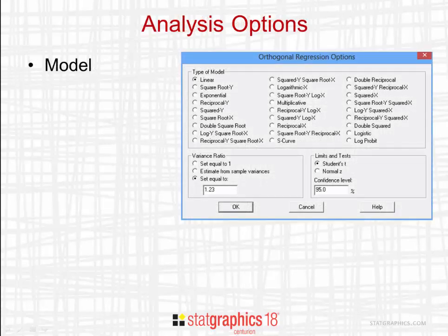When performing an orthogonal regression in StatGraphics 18, a number of different options may be selected. The first is the form of the model to be fit. In addition to the linear model, there are 26 transformable nonlinear models from which to choose.